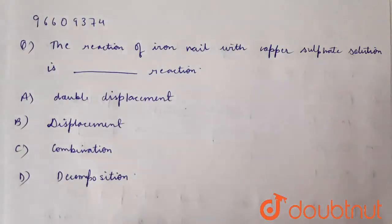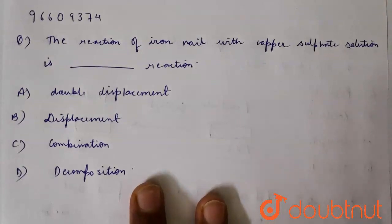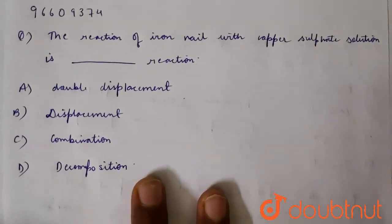Welcome guys, let us discuss this question. The question is that the reaction of iron nail with copper sulfate solution is dash reaction. So how do we know the reaction of iron nail in copper sulfate solution? First of all, I will discuss this reaction.